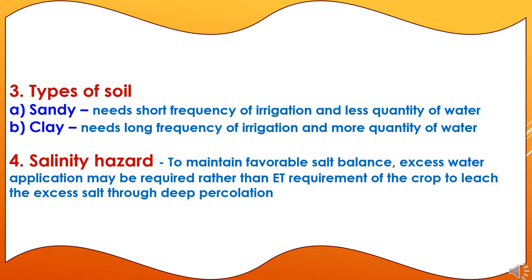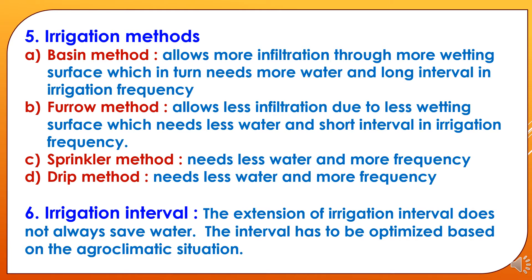The fourth criterion is salinity hazard. To maintain a favorable salt balance, excess water application may be required beyond evapotranspiration requirements in order to leach excess salt through deep percolation. The fifth criterion is irrigation methods: the basin method allows more infiltration through more wetting surface, needing more water and long intervals; the furrow method allows less infiltration due to less wetting surface, needing less water and short intervals; and the sprinkler and drip methods both need less water and more frequent application.